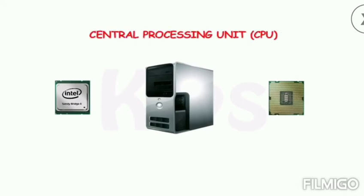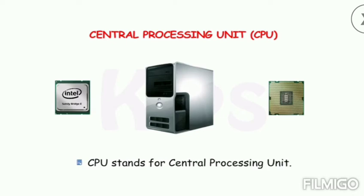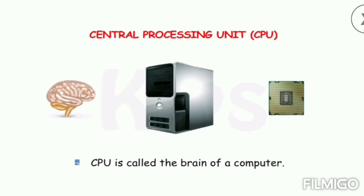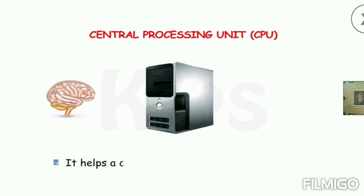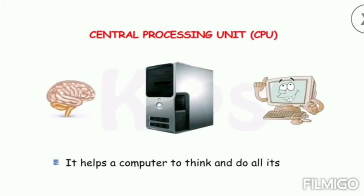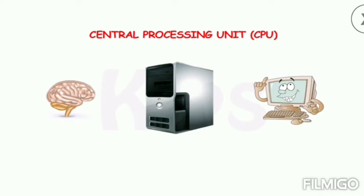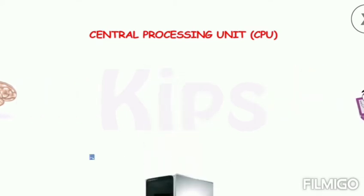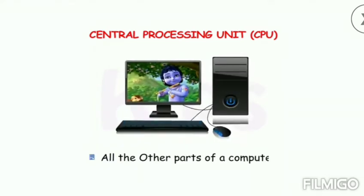Let us learn about the most important part — the Central Processing Unit, popularly known as the brain of the computer. CPU stands for Central Processing Unit. It is called the brain of a computer. It helps a computer to think, do all its work, and also helps a computer to remember things.